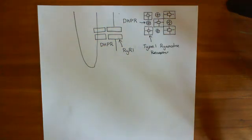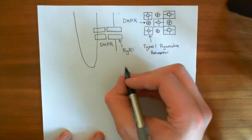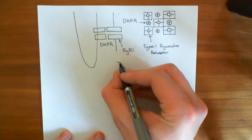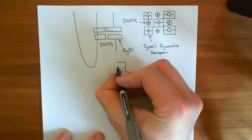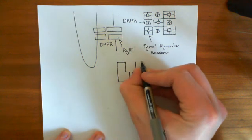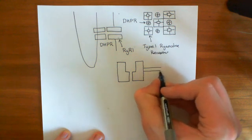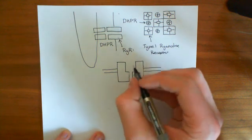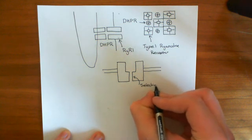Let's have a look at the structure of a type 1 ryanodine receptor. If you look at the structure of the pore, you find a wide bit and then a narrow bit. The narrow bit is the selectivity filter of this channel. Ion channels always usually have selectivity filters, which make sure that only the ion this channel wants to conduct can actually go through it. This narrow portion is the selectivity filter of our ryanodine receptor.